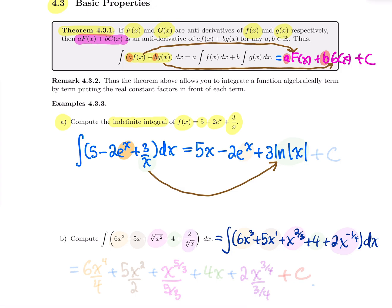So the 1 over x becomes ln of absolute value of x, and the e^x goes to e^x. Don't forget the plus c at the end.